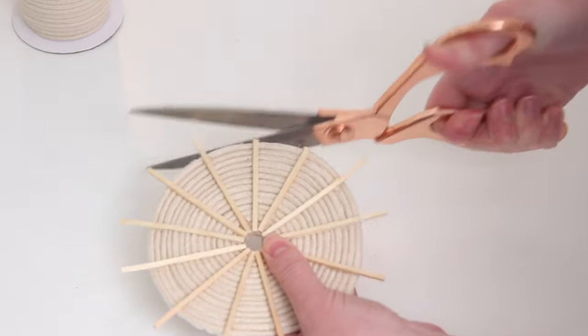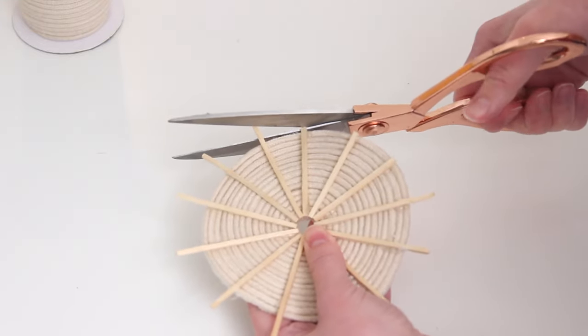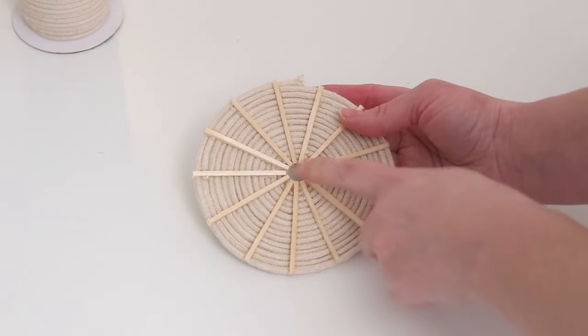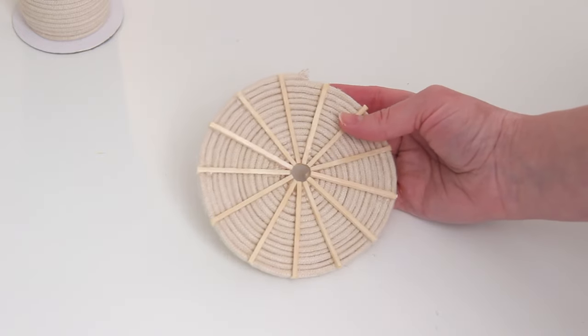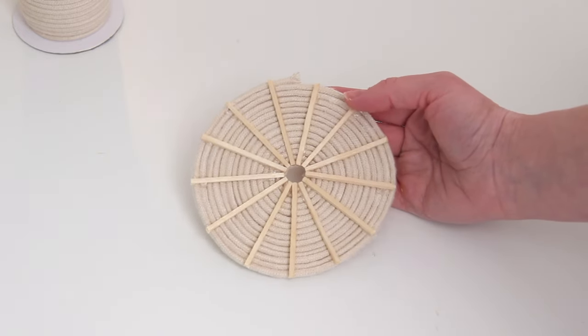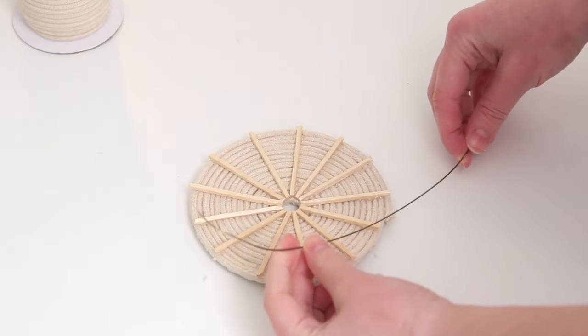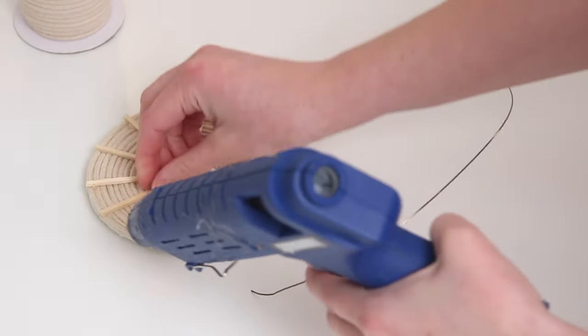Then I went in with my scissors and I just cut off right at the edge of the rope, and it was really easy to cut. I also went back in and cut out the middle of the rope because I wanted there to be an empty space there.